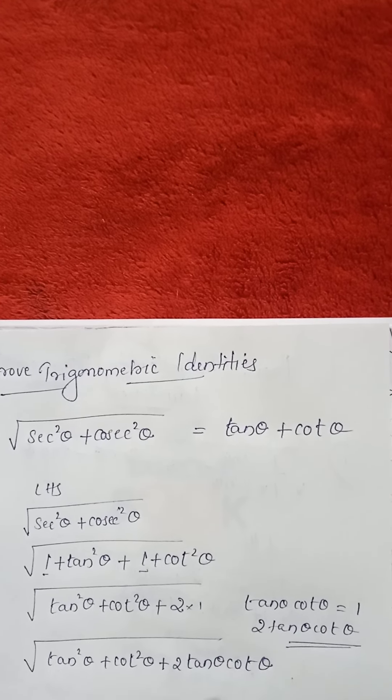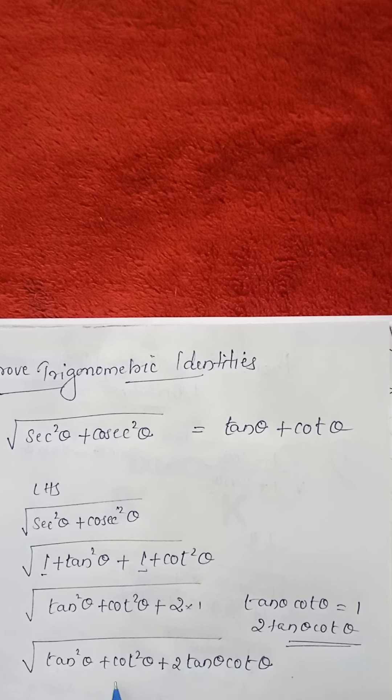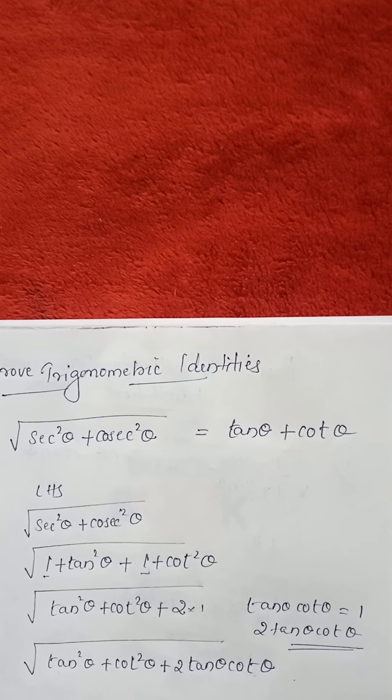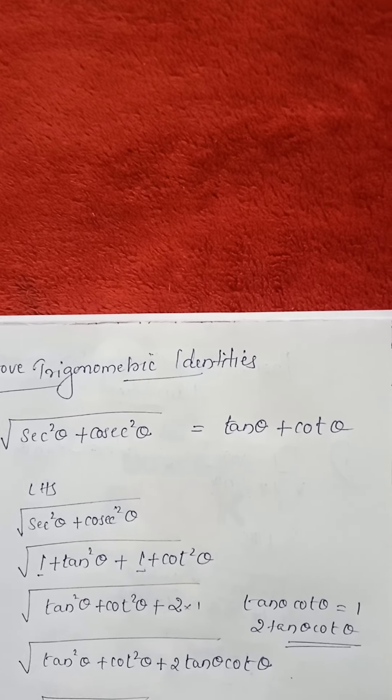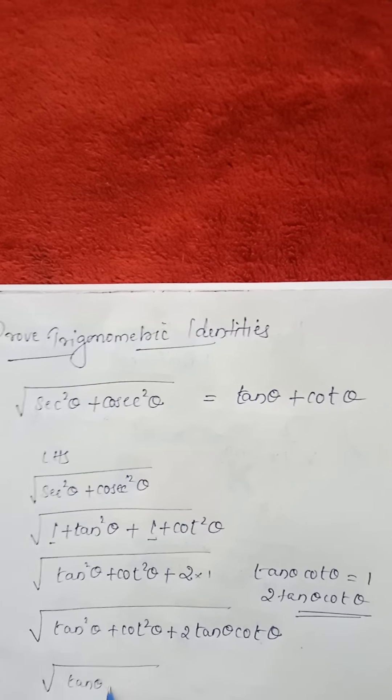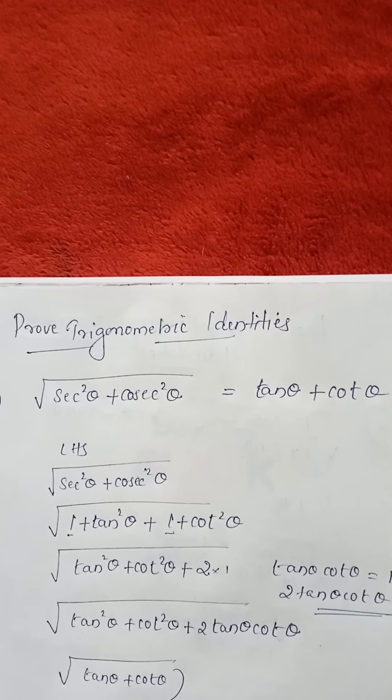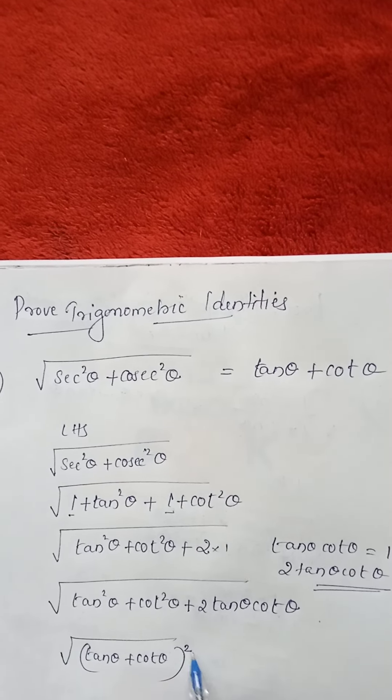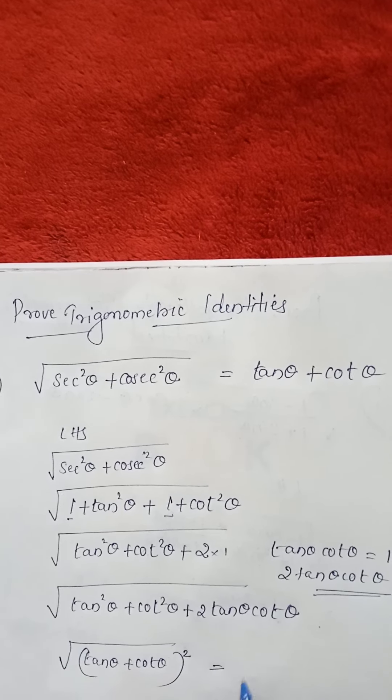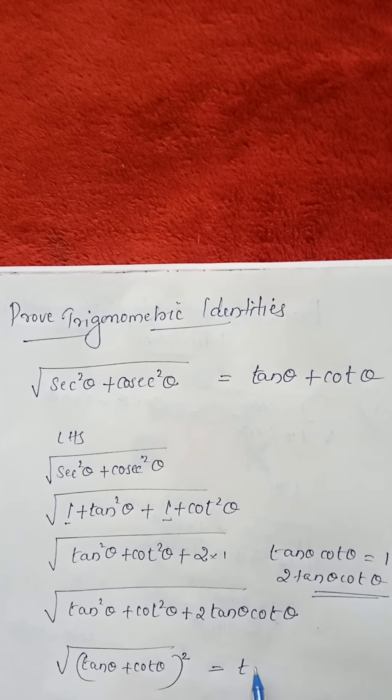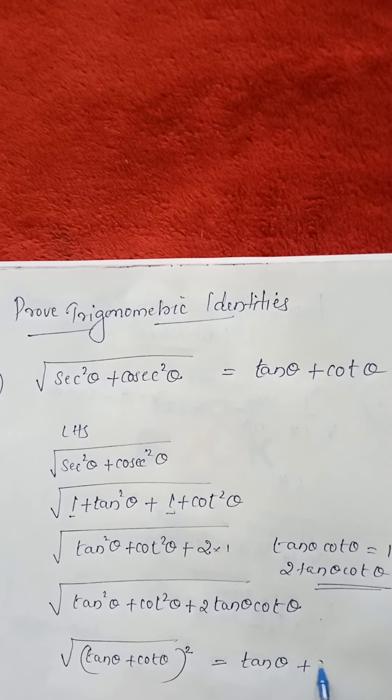So this is what expansion is here, which identity? A plus B, the whole square identity. So we have to write tan theta plus cot theta, the whole square. So that is equals. We have to take the root that tan theta plus cot theta.